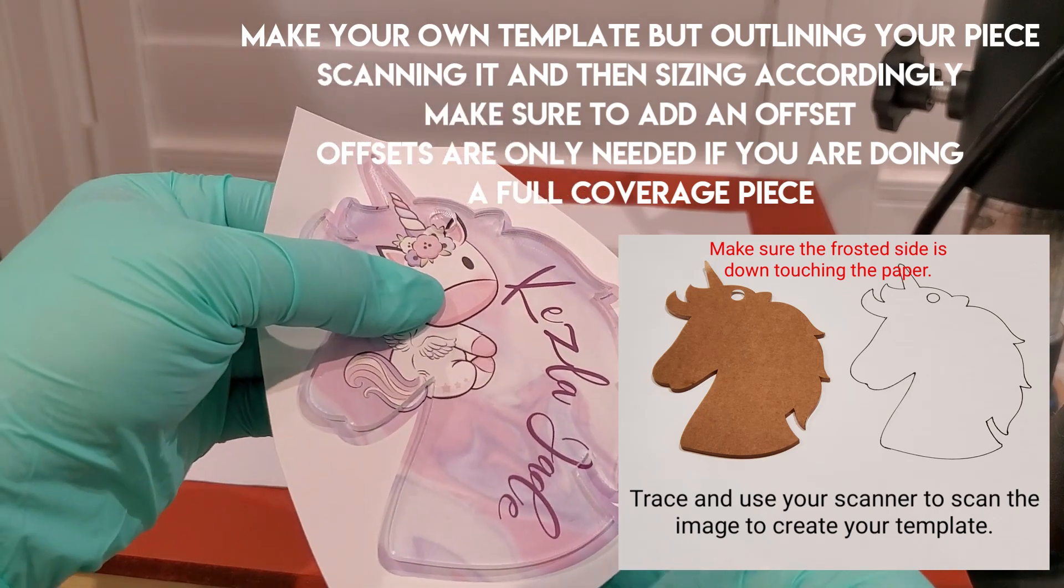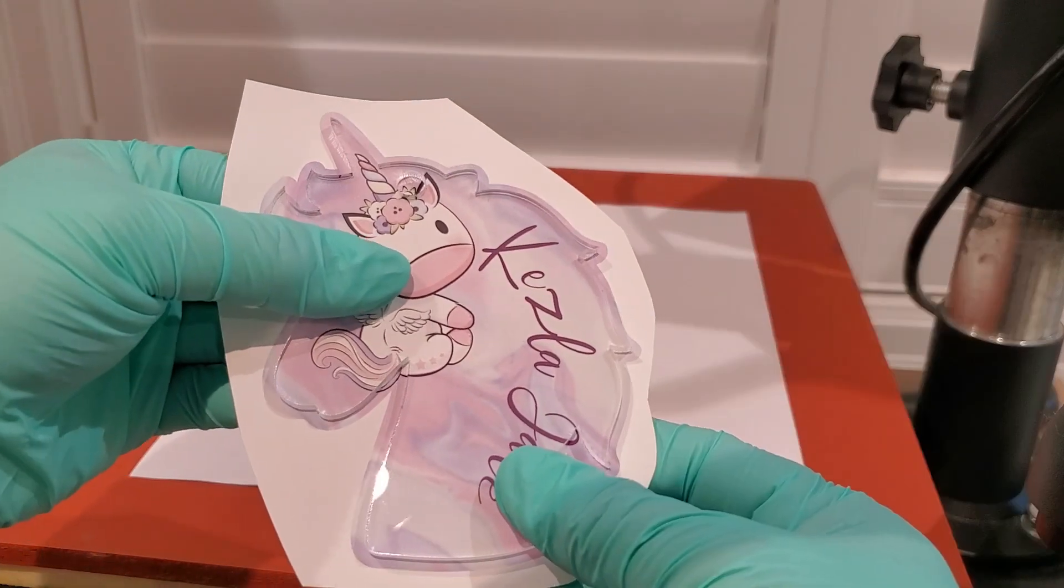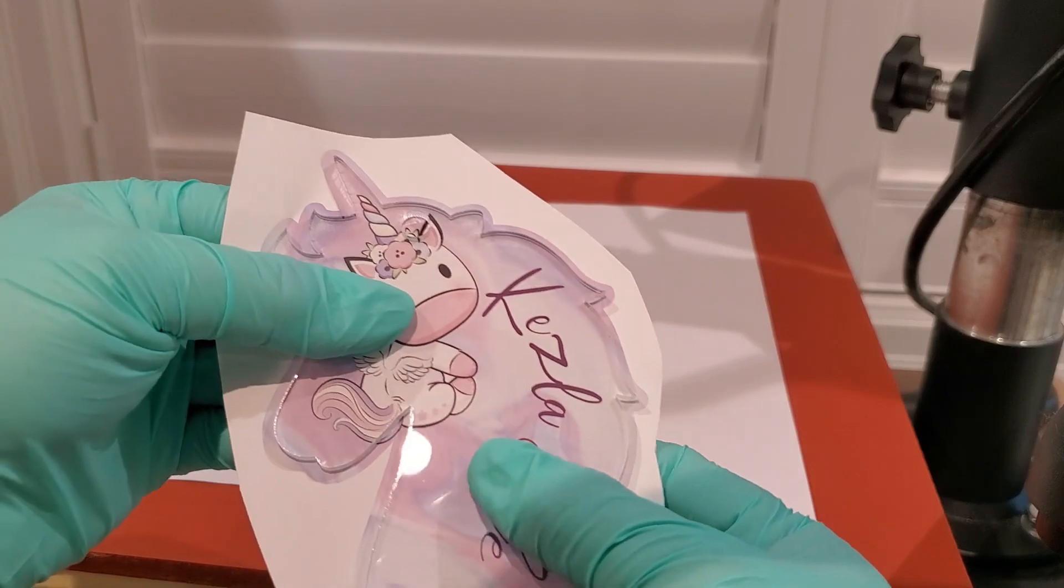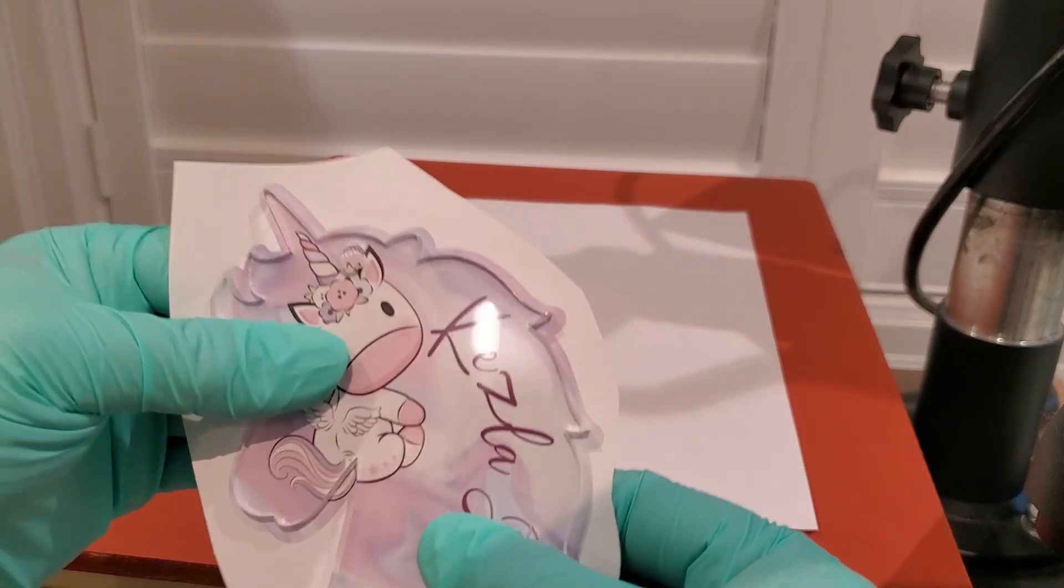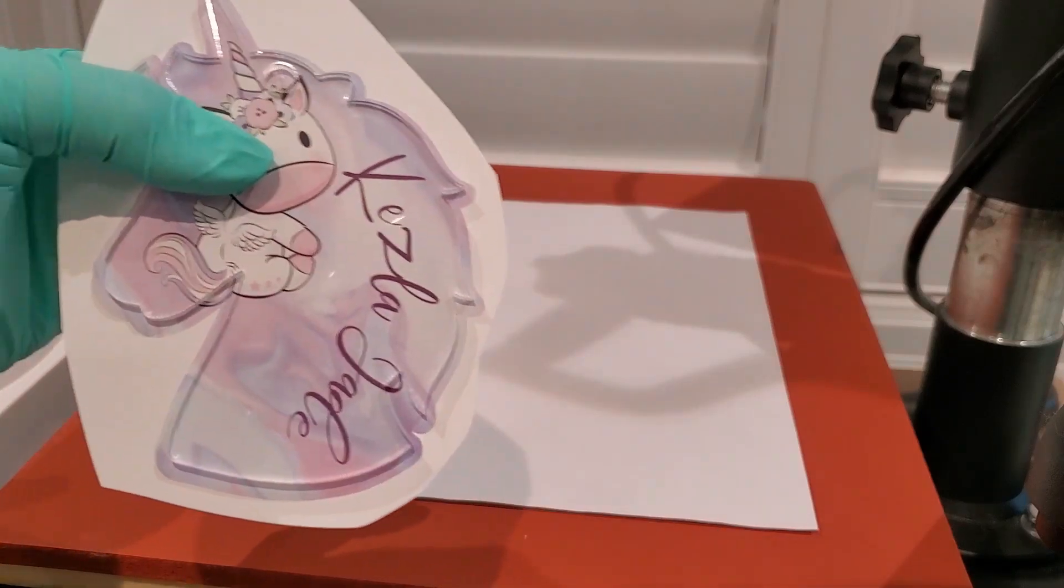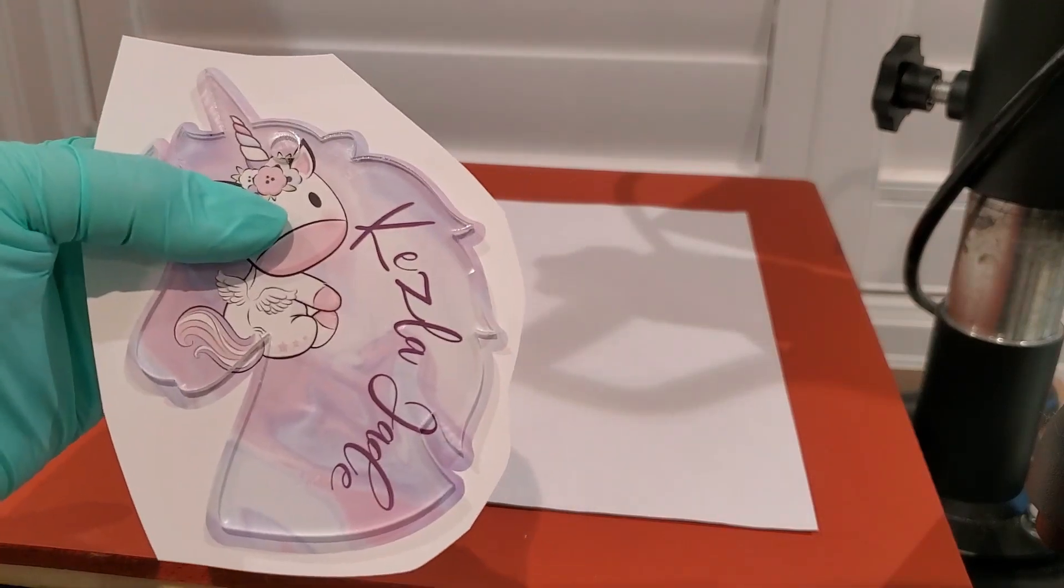I do an offset to make sure that my image is a little bit bigger. So when it subs, it subs really nicely and you have a little bit of play. Now when I cut my images, I don't cut them all the way to the edge. The reason for that is how we have to tape.